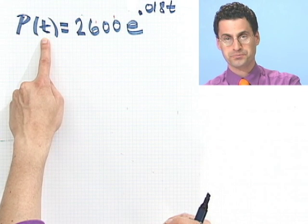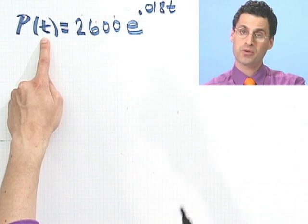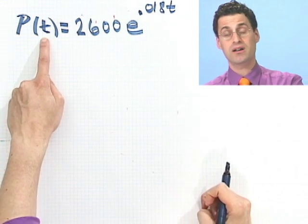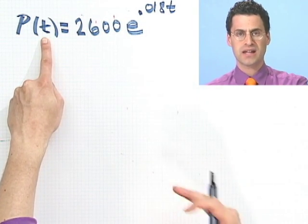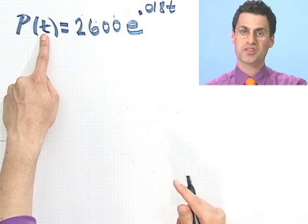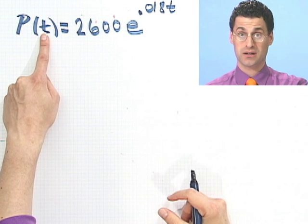Where I remind you, t is the number of years since 1950. So if I want to know the population roughly at the year 1951, I wouldn't put in 1951 here. I would just put in 1, because it's the number of years after 1950.